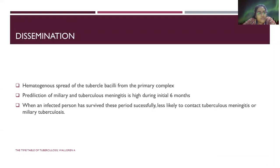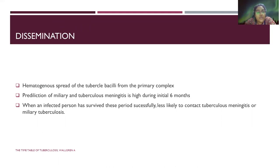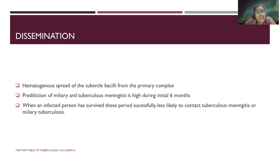Dissemination involves a hematogenous spread of tubercle bacillus from the primary complex in the initial six months, where you develop miliary tuberculosis or tuberculosis meningitis. When an infected person survives this period successfully, there is less likelihood for them to develop tuberculosis meningitis or miliary tuberculosis.